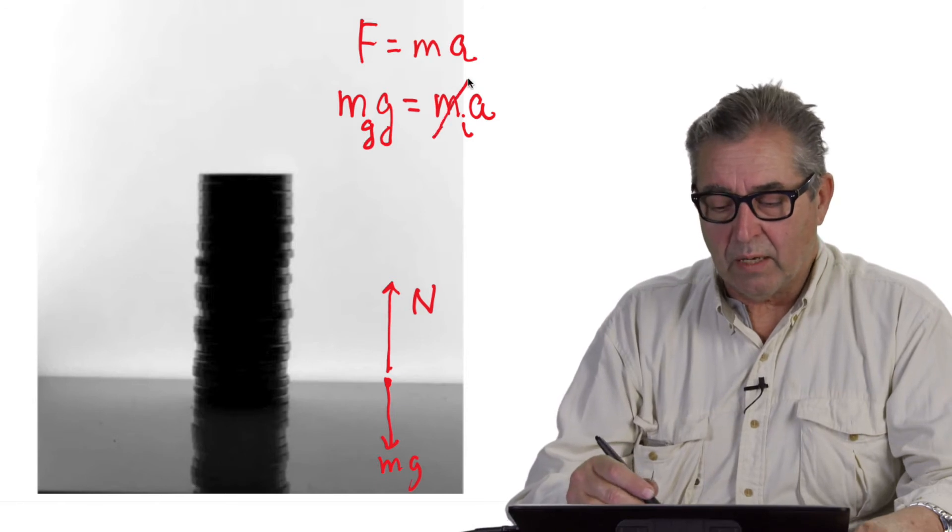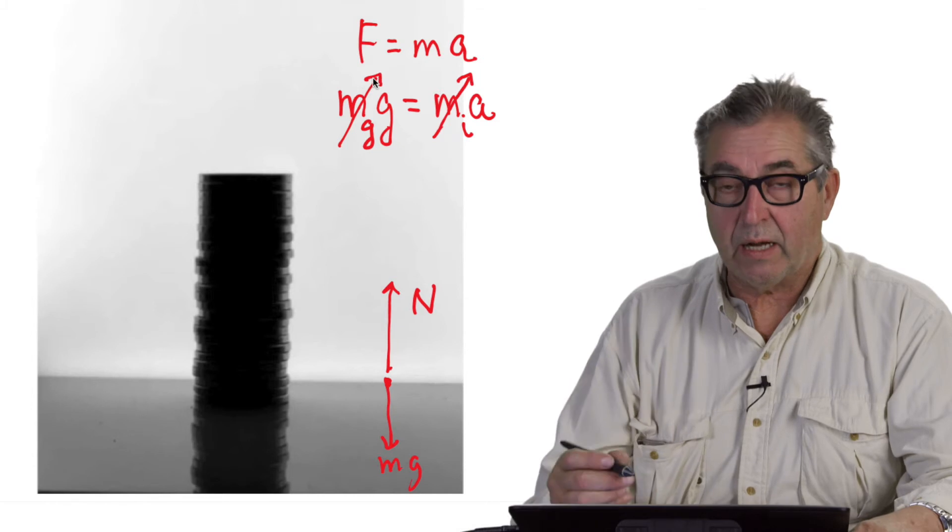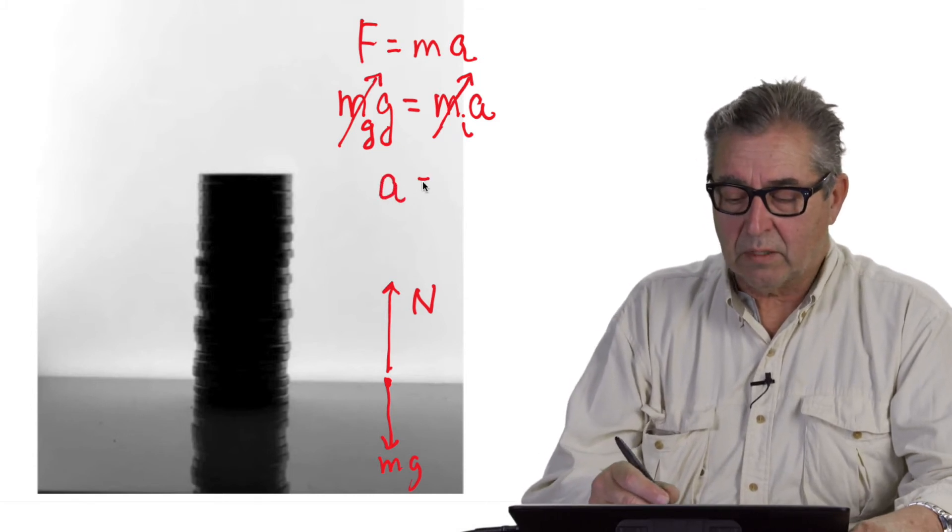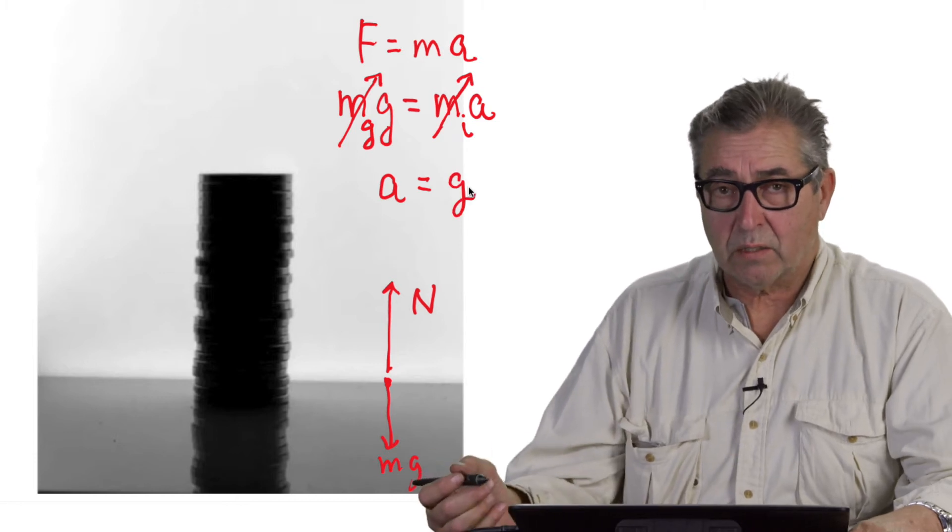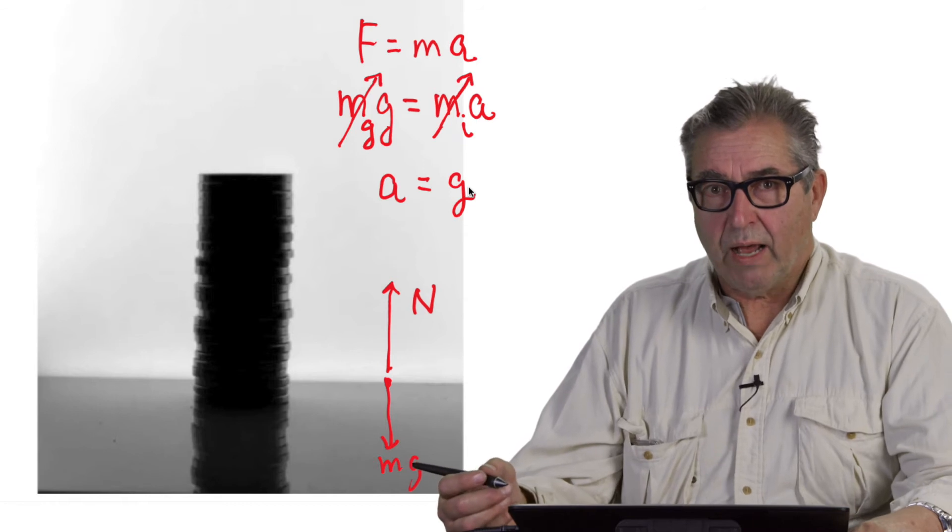Now, the principle of equivalence says that inertial mass and gravitational mass are identical, so they cancel on both sides, giving us the fact that the acceleration of all bodies in free fall is the acceleration due to gravity.